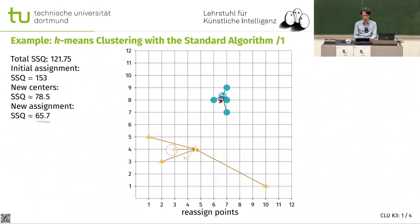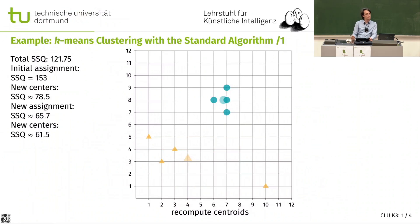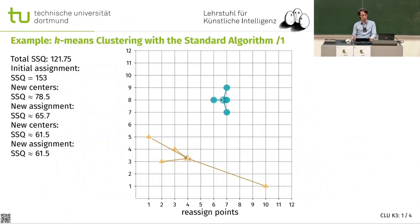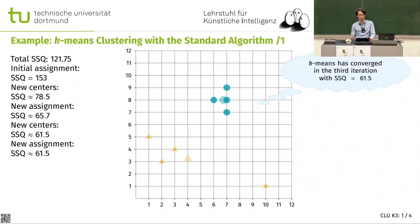I have new cluster centers and I can do the same heuristic again. We can see it's probably now converged. To verify this, we have to reassign all points, and we get the same labels. So the clustering has converged after three iterations or so, with a sum of squares of 61.5.